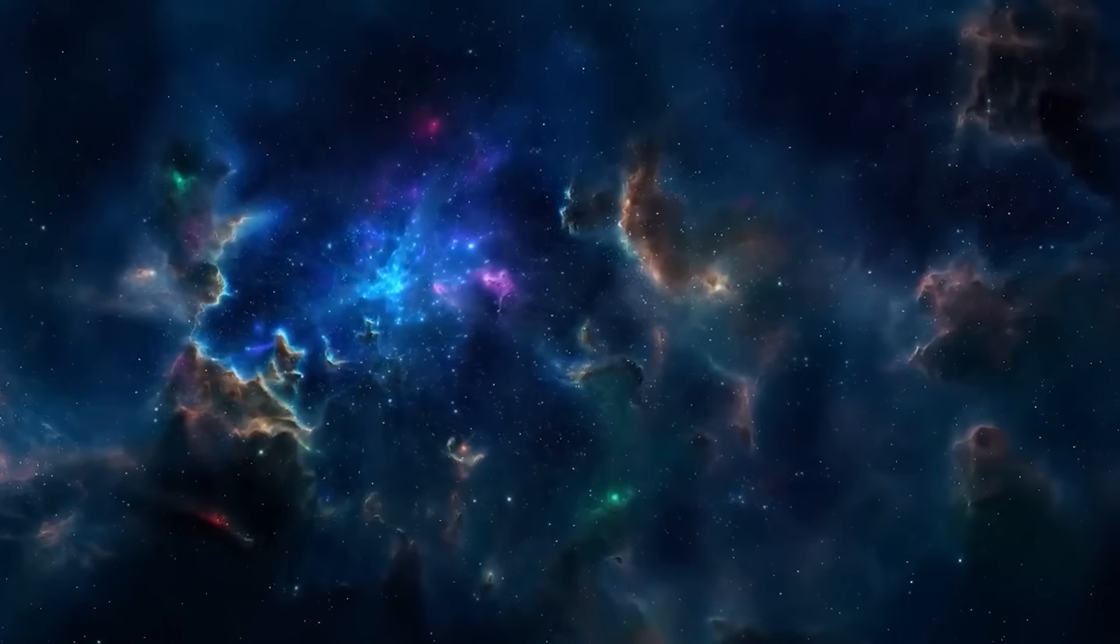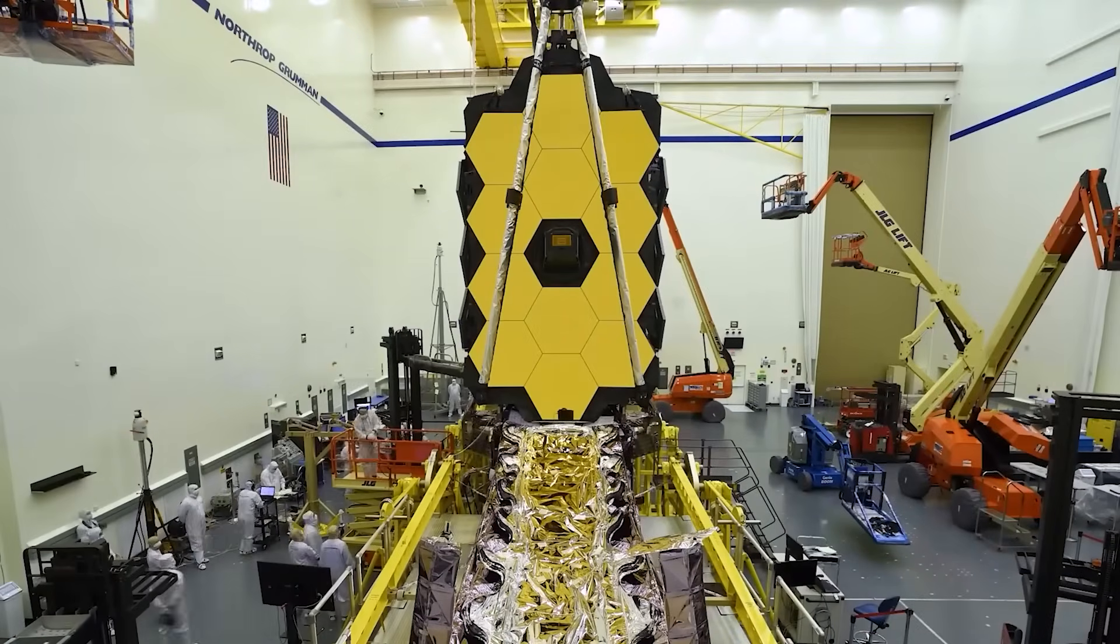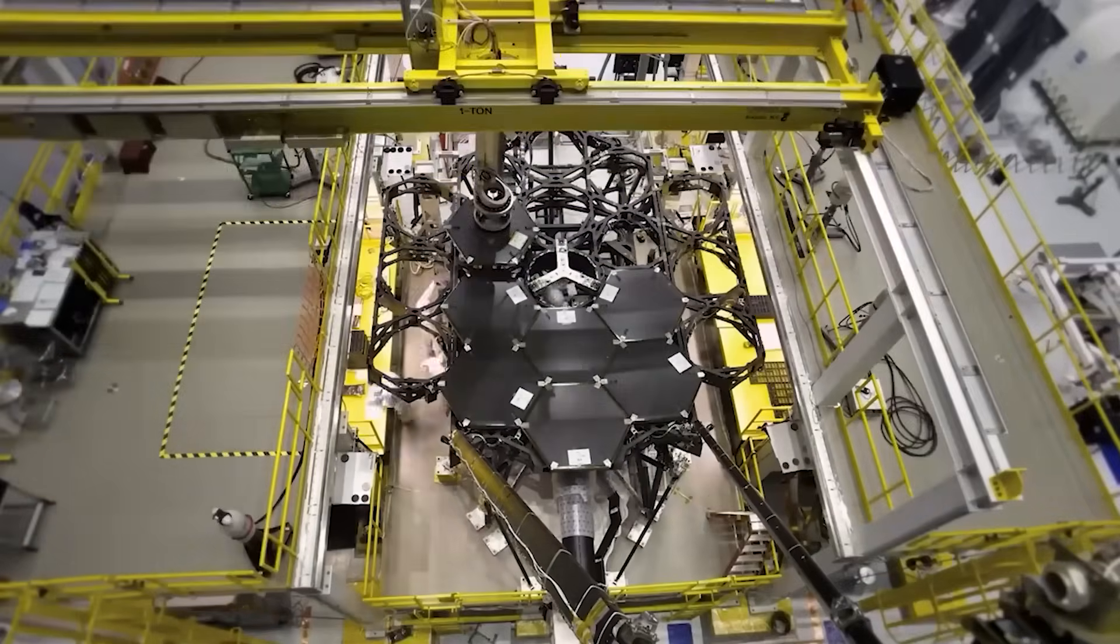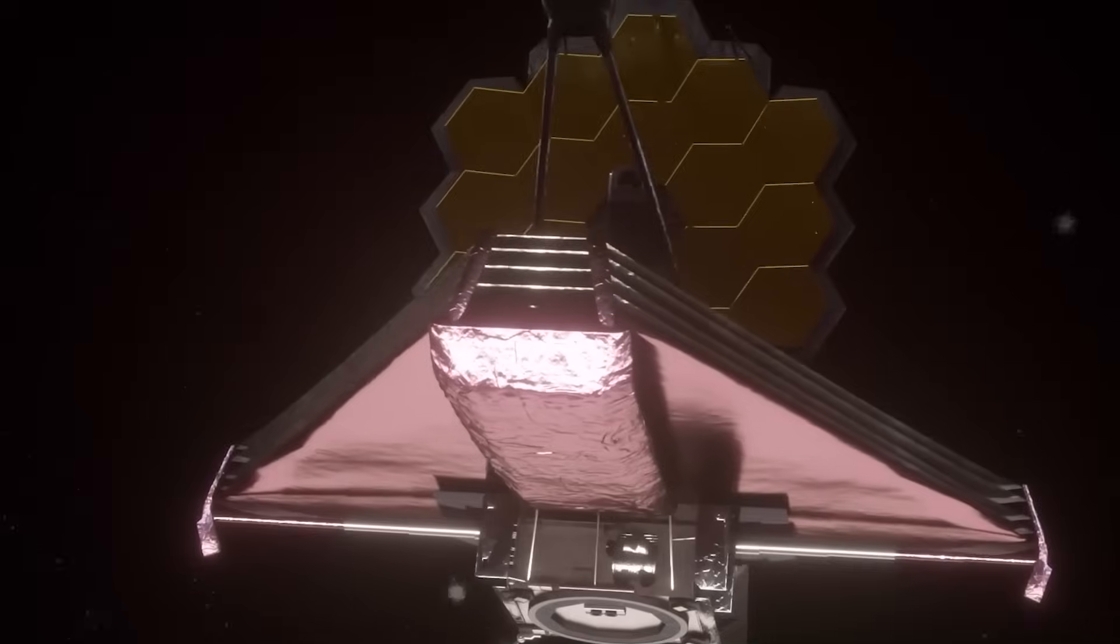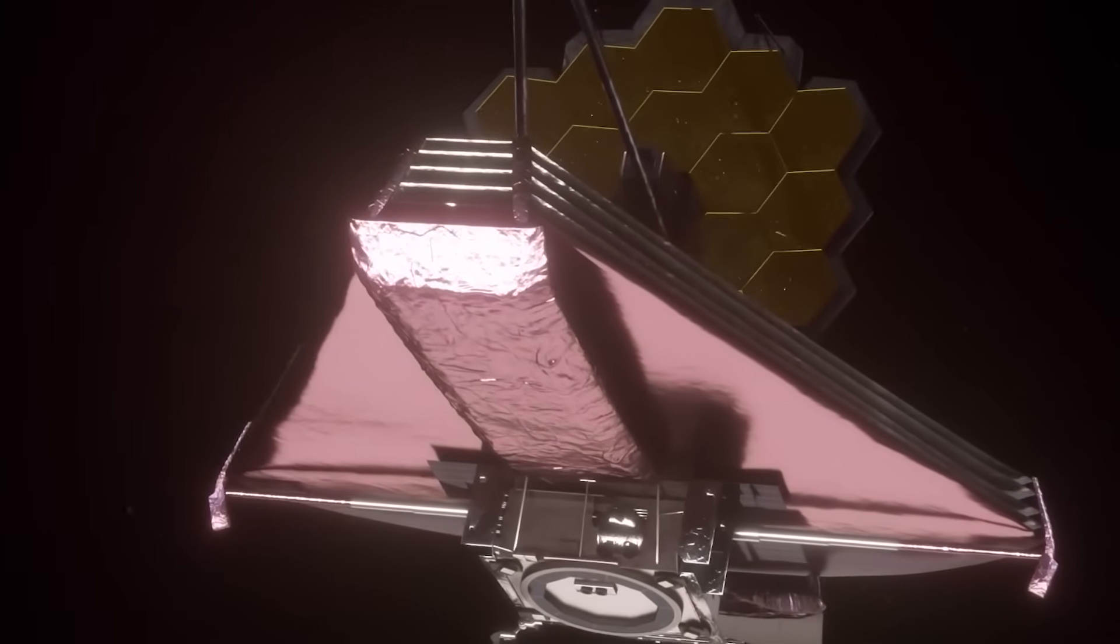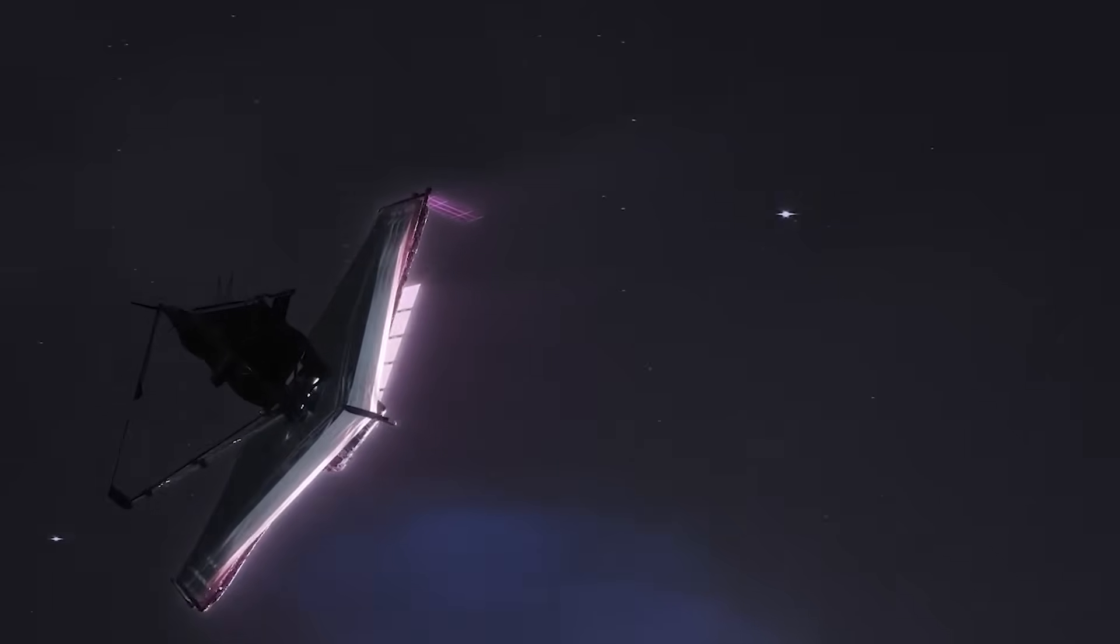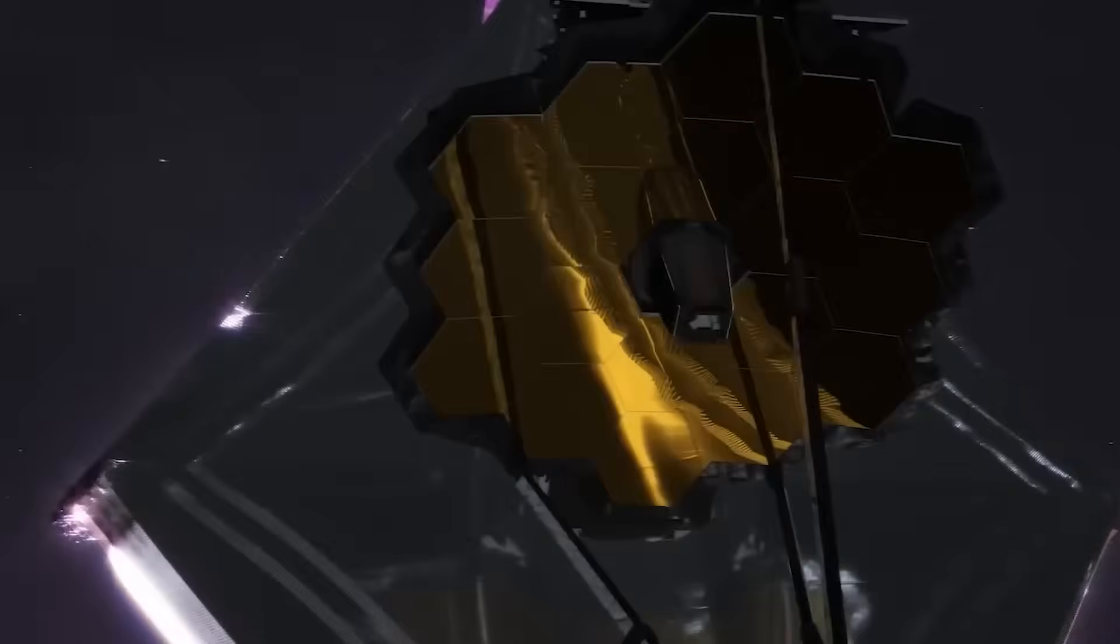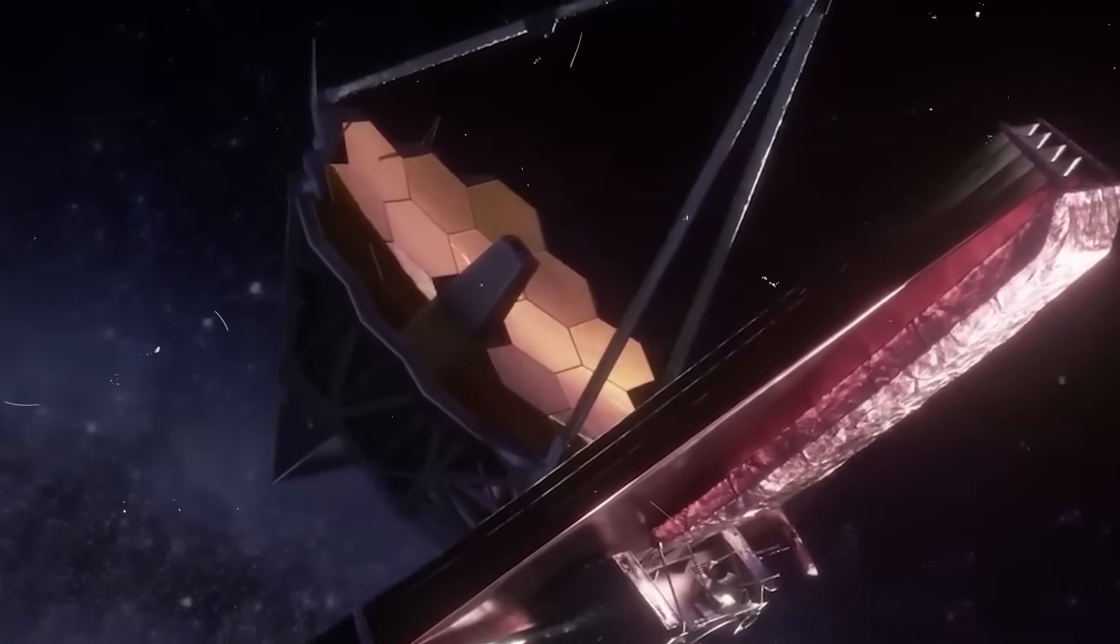None of these findings can be dismissed as observational error. The James Webb Space Telescope was designed with unprecedented sensitivity and precision. Its instruments operate in the deep infrared, allowing it to see through cosmic dust and capture the faintest glimmers of the early universe. Calibration checks, cross-referencing with other observatories, and repeated scans have all reinforced the validity of the data. Every confirmation deepens the mystery.